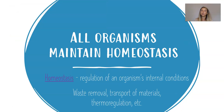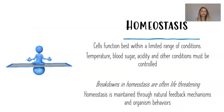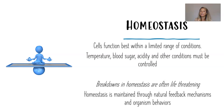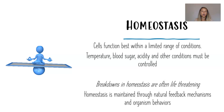Our next characteristic of life — and one of the unifying themes you'll hear over and over again this year — is that all organisms maintain homeostasis. Homeostasis is the regulation of an organism's internal conditions, maintaining a stable internal environment. That includes removing waste, transporting materials, maintaining temperature through thermoregulation. Maintaining homeostasis is like a seesaw where you are constantly balancing within a very limited range, because cells function best within a limited range of conditions. Temperature, blood sugar, acidity, and other conditions all have to be controlled so cells can function at their prime.